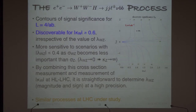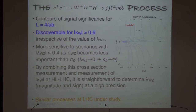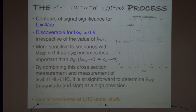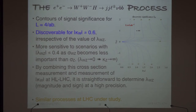Using this interference method, by simply measuring the total cross section of e⁺e⁻ → WWH — without any fancy angular analysis — you can determine both the magnitude and sign of λ_{WZ}, and therefore determine kappa_W and kappa_Z individually including their signs. We are currently studying a similar process at the LHC.